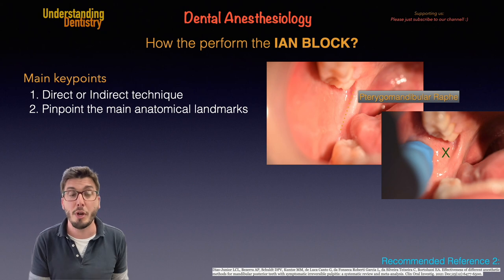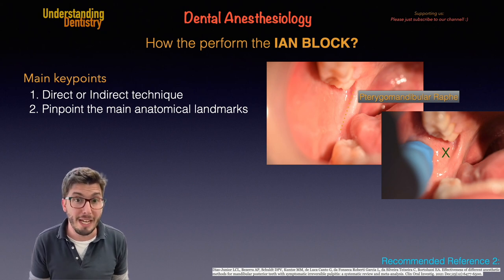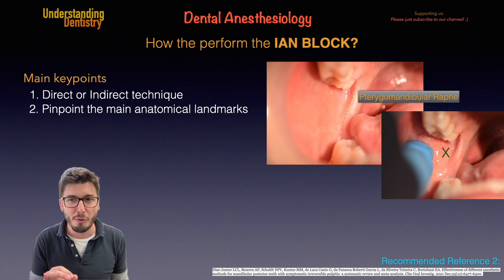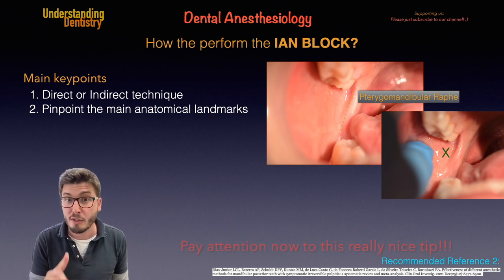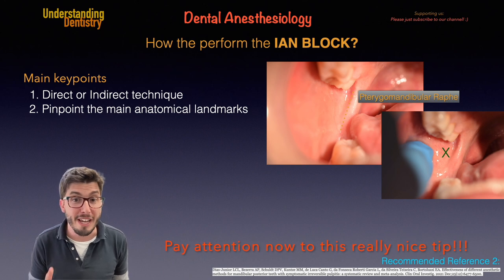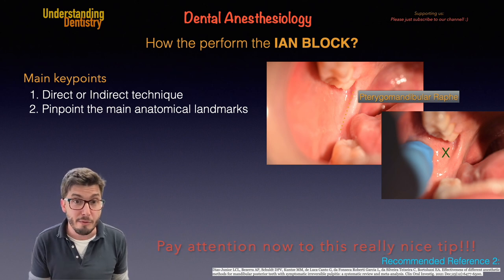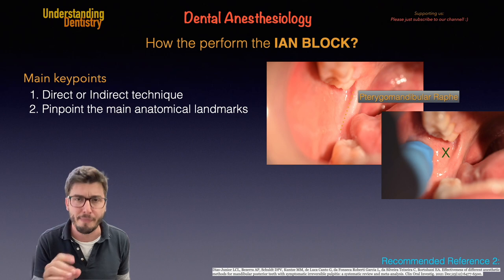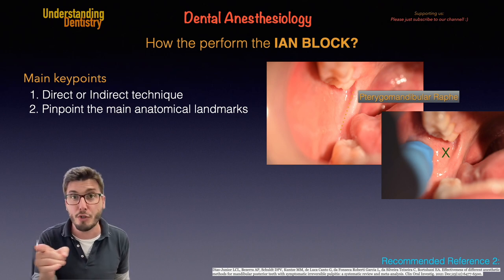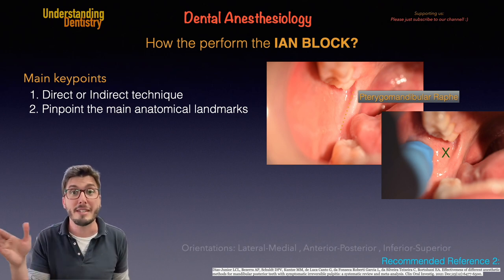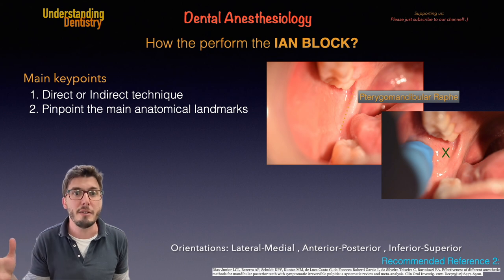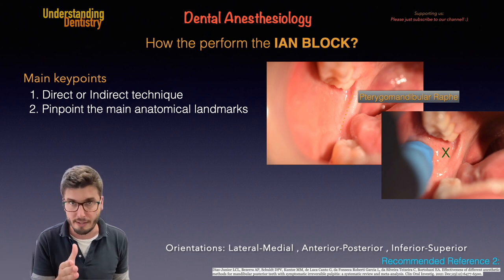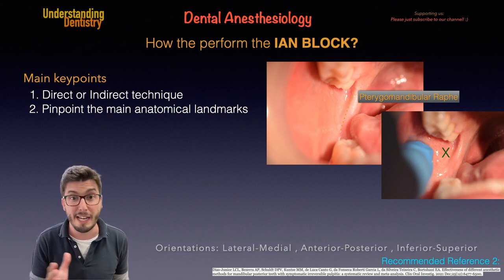The second key point is to pinpoint the main anatomical landmarks. I'm going to show you where the bone actually is. You can see the pterygomandibular raphe, and you want your needle lateral to the pterygomandibular raphe. When I say lateral, I mean away from the center. When I say medial, I mean close to the center — close to the sagittal midline, for example.